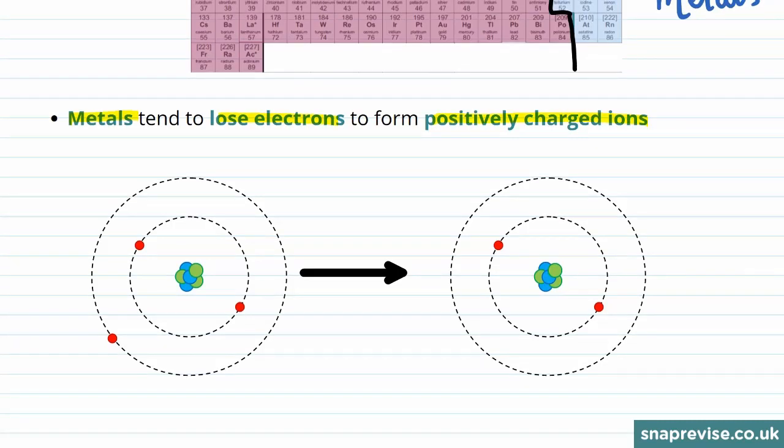You can think about why this is by thinking about the position of metals in the periodic table and what this tells us about their electronic configuration.